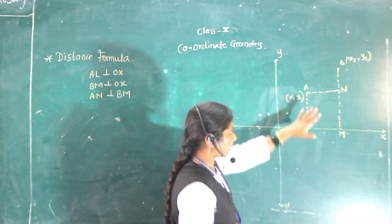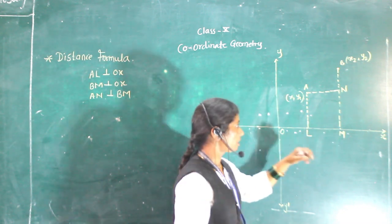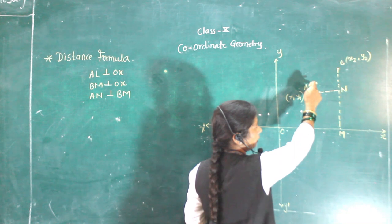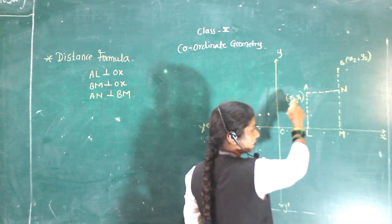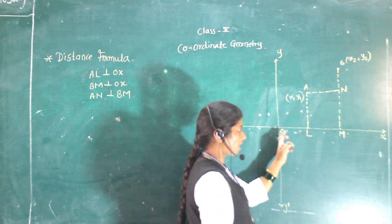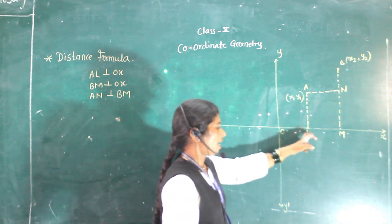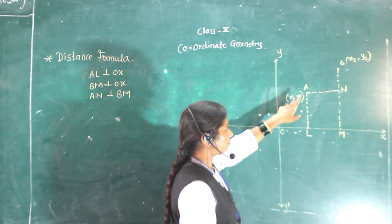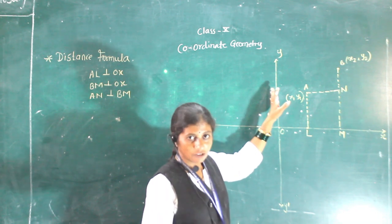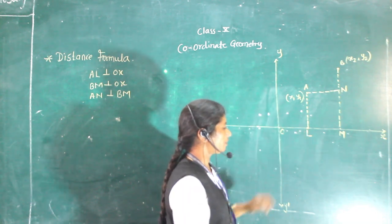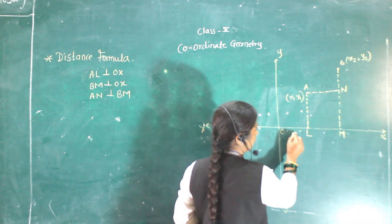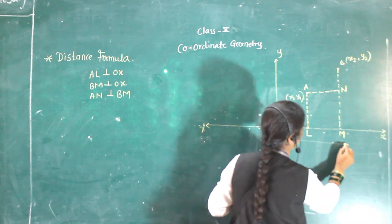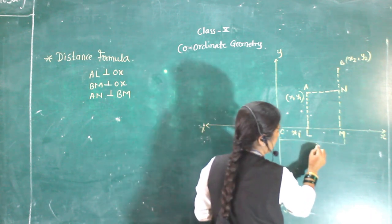Now we will see what these points are. The distance from O to L is x1, and O to N is x2. Suppose x1 is 3 and x2 is 5, so we write x1 from O to L and x2 from O to N.